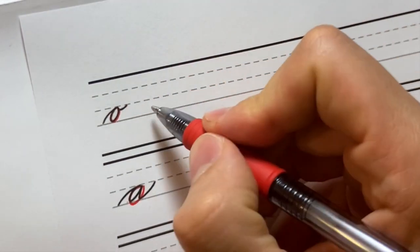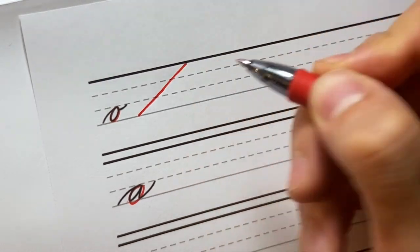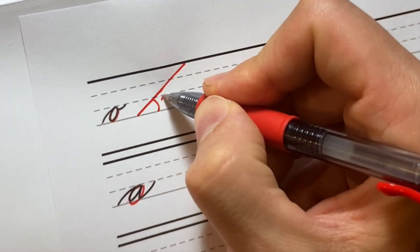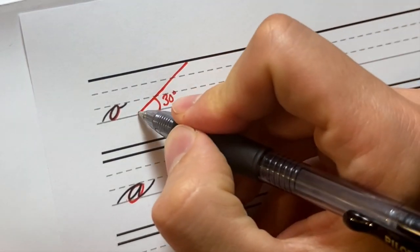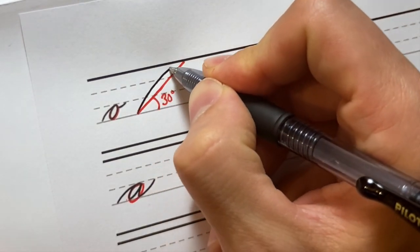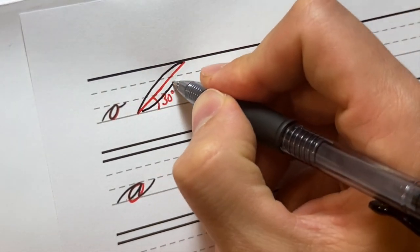So if we remember, say we have our main connective slant like this on our grid. Remember, this is our 30 degree connective slant. The overturn is going to curve over that like that, okay? Whereas our underturn goes under like that.